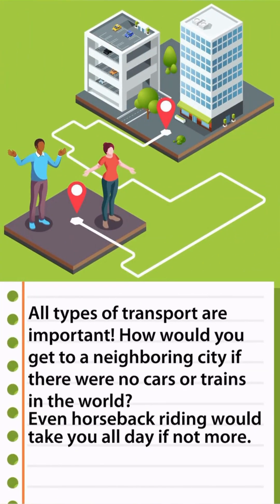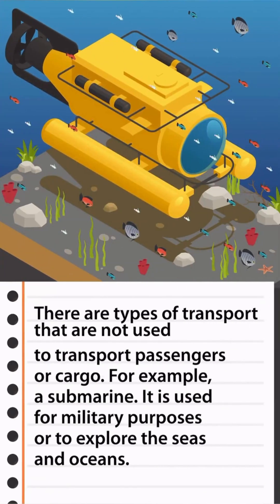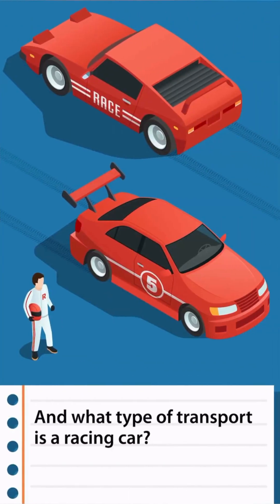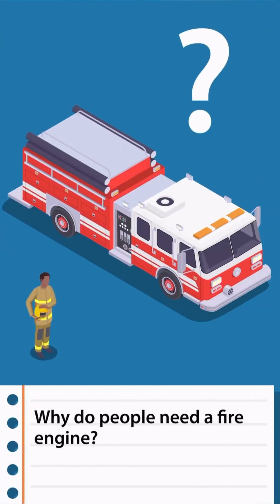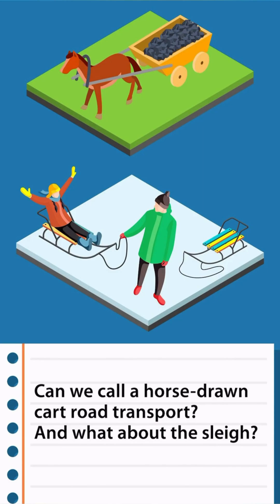All types of transport are important. How would you get to a neighboring city if there were no cars or trains? Even horseback riding would take all day, if not more. Some transport is not used for passengers or cargo — for example, a submarine, used for military purposes or to explore the seas. What type of transport is a racing car? Why do people need a fire engine? Can we call a horse-drawn cart road transport? And what about the sleigh?